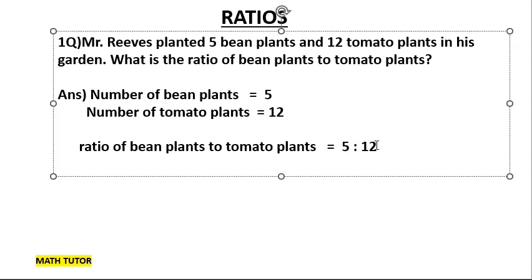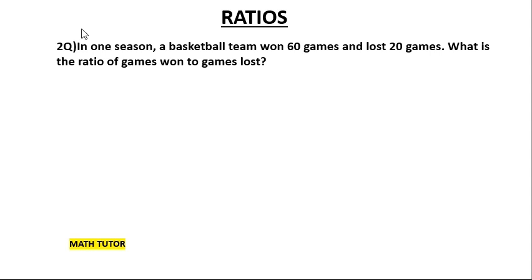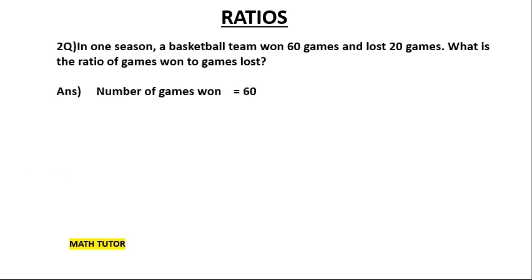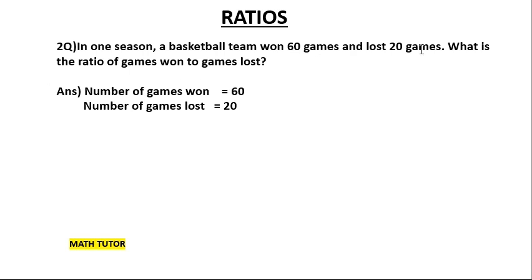Second question: In one season, a basketball team won 60 games and lost 20 games. What is the ratio of games won to games lost? So in one season the basketball team played, it won 60 games and it lost 20 games. It is asking for the ratio of games won to games lost. Number of games won by the basketball team was 60, number of games lost was 20. The order is important — games won comes first, then games lost. Can you try, kids? What is the answer?